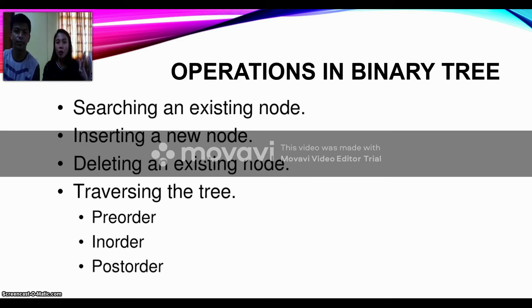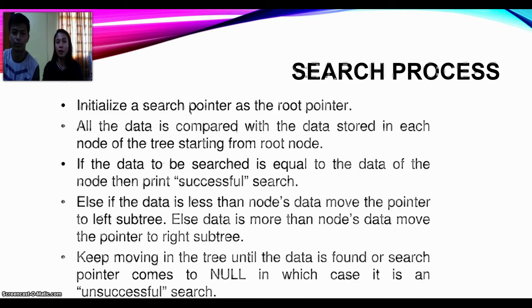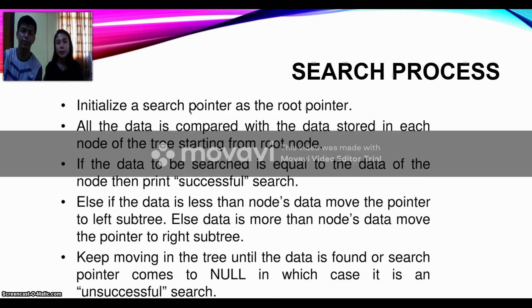And these are the common operations in binary tree. Number one, searching an existing node, insertion, deletion, and traversing the tree. For traversal, there are three orders: pre-order, in-order, and post-order.